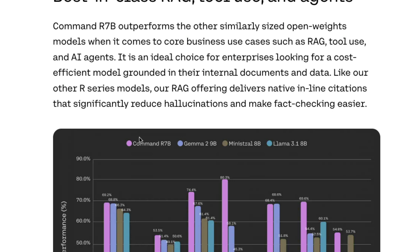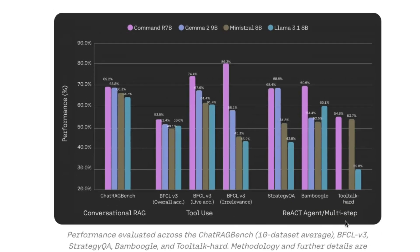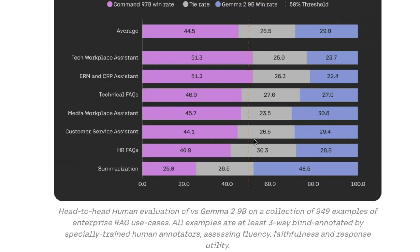The most important reason to cover this model is its RAG benchmark performance. Across multiple RAG use cases — conversational RAG, tool use, and ReAct (the three-step agent process, not the JavaScript framework) — Command R 7B is way better than its counterparts. This makes it the model you should ideally start using for local RAG setups or conventional NLP use cases.